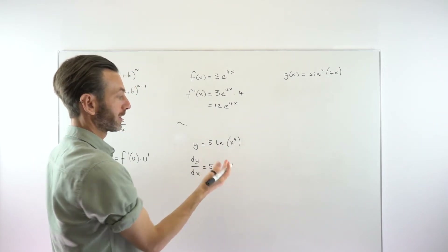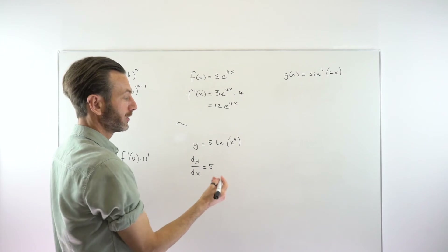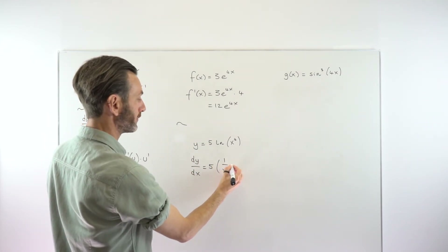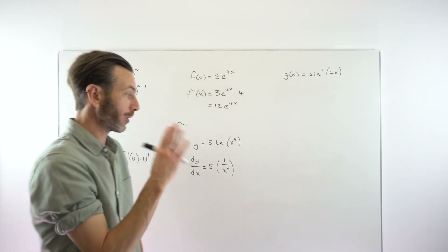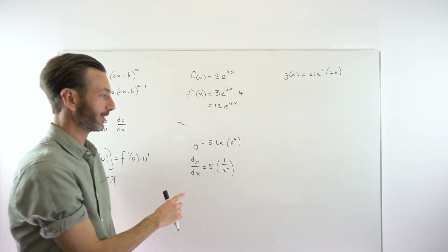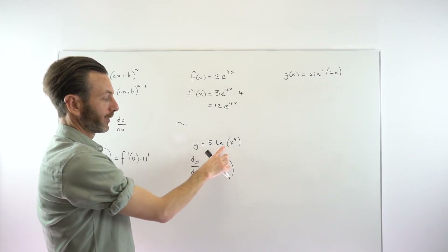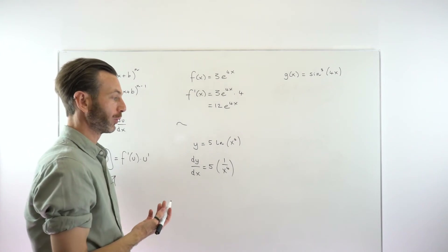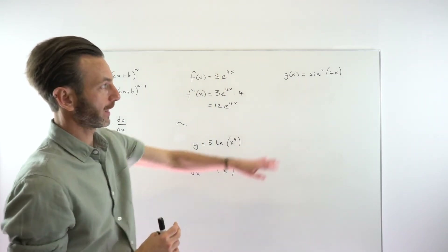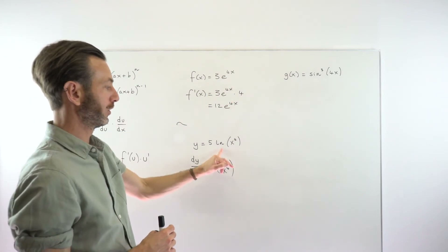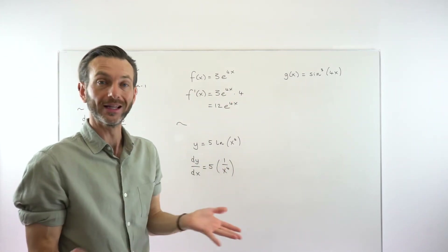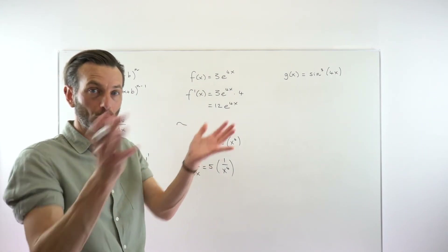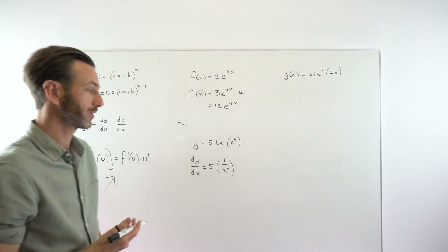When you differentiate a log function, you get 1 over the internal part — so it's 1 over x to the 4. That is the derivative of the natural log of x to the 4, and then the chain rule part will kick in. The individual differentiation rules — how to differentiate a sine, an exponential, a log — are things you'll need to learn in addition to the chain rule. The chain rule tells you how to do the overall thing, but the individual rules still need to be part of that.